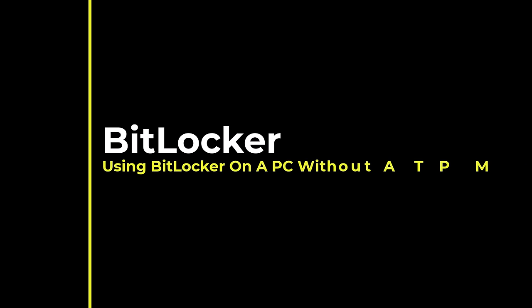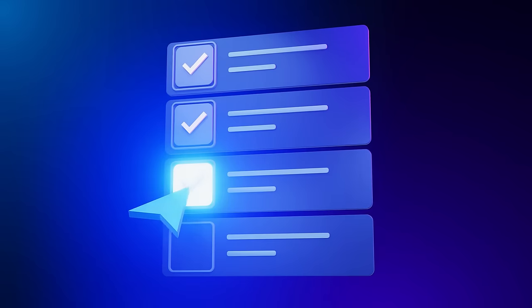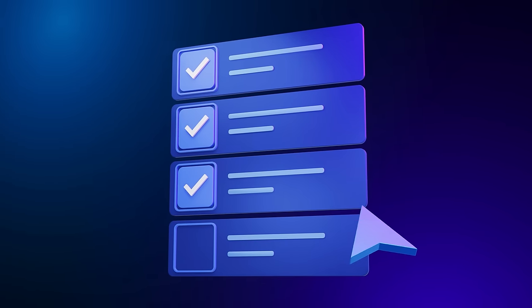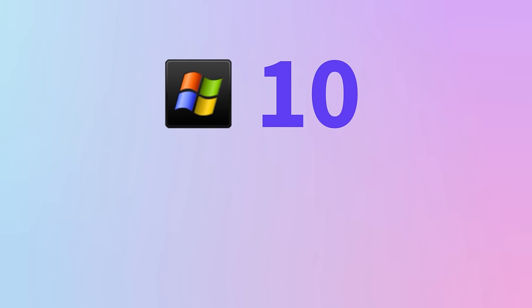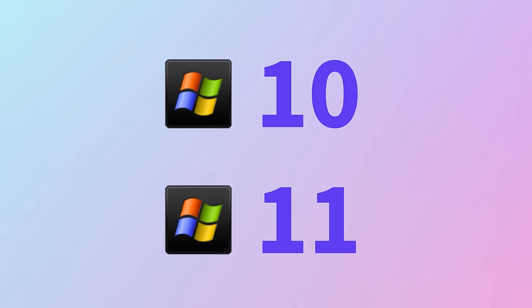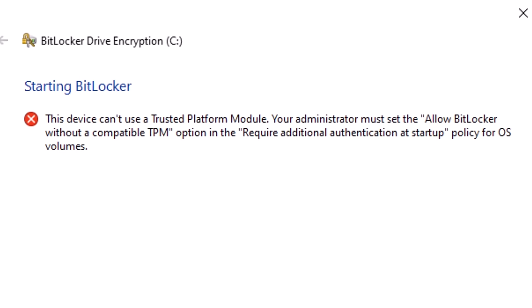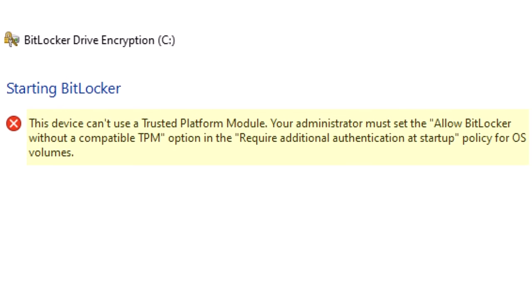In order to use BitLocker on a PC without a TPM chip, your PC will need to be configured to do so. If you attempt to use BitLocker without a compatible TPM chip installed, you will see an error window. We need to make a change in your PC's Group Policy using the Group Policy Editor. You will need administrative privileges on your login account to do this.